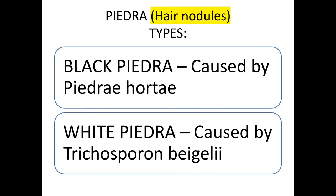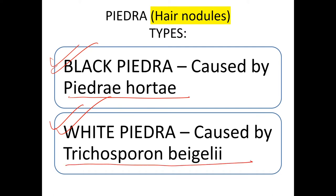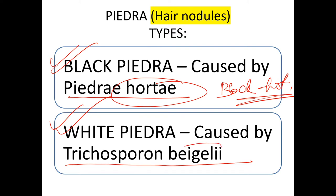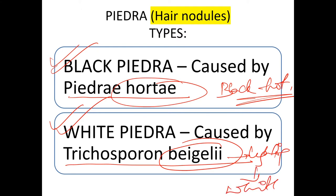Piedra has two types: black piedra and white piedra. Black piedra is caused by Piedra hortae, and white piedra is caused by Trichosporon beigelii. To remember: 'hortae' — hot/burn = black; 'beigelii' — lightning in India = white. Piedra occurs as hair nodules.